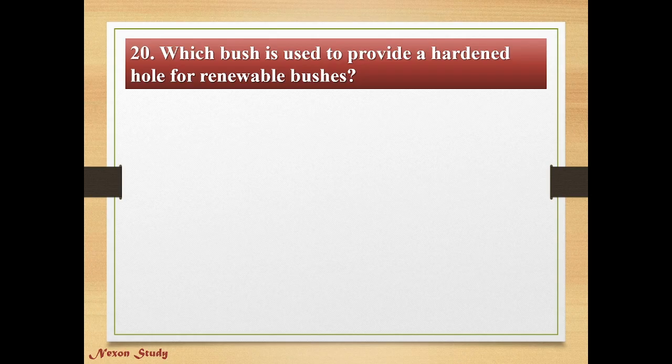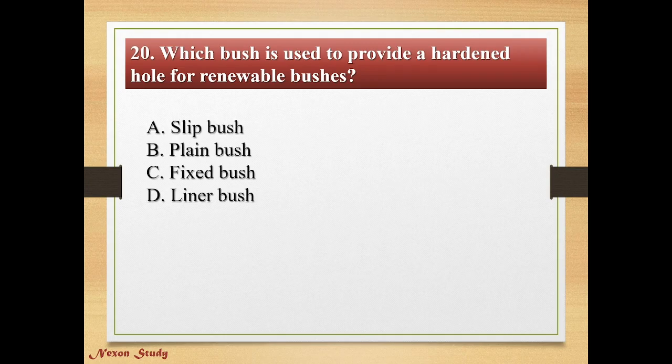Question: Which bush is used to provide a hardened hole for renewable bushes? Options: slip bush, plane bush, fixed bush, linear bush. Correct answer is liner bush.